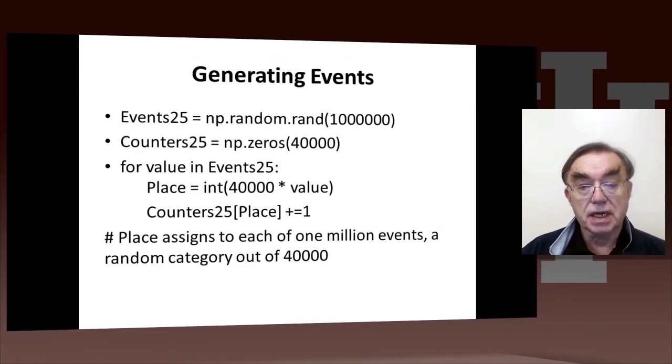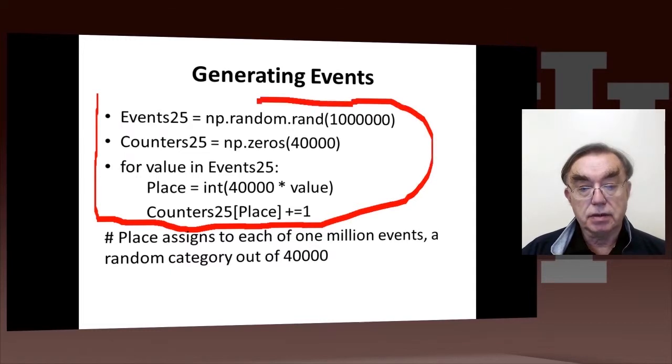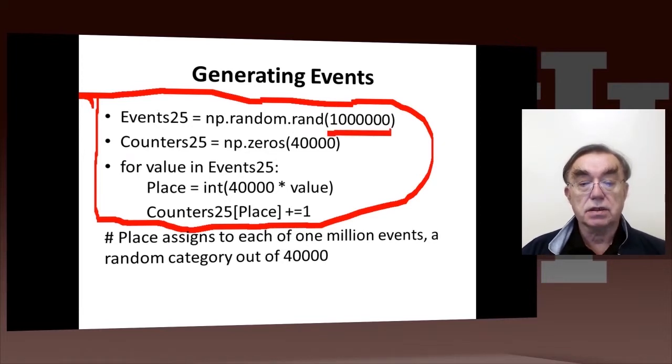Next slide here just gives the code that produces that green histogram. And we can probably think about this in a little detail. Here we're generating our million results because I told you we had a million people or a million physics results. These million results are just numbers between 0 and 1. So how do we get 40,000 counters out of this? Well, we just divide the region between 0 and 1 into 40,000 parts, each of which is equal size. That's what this is done here.